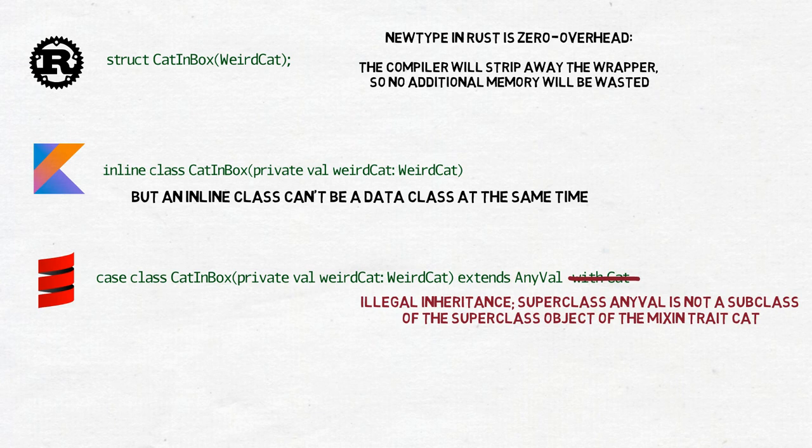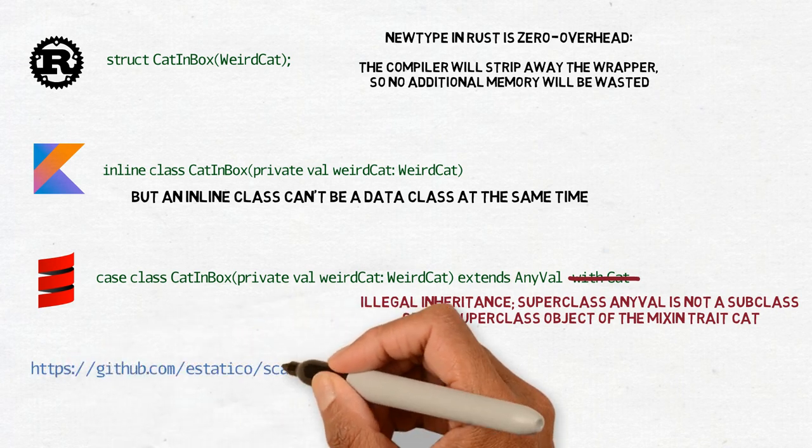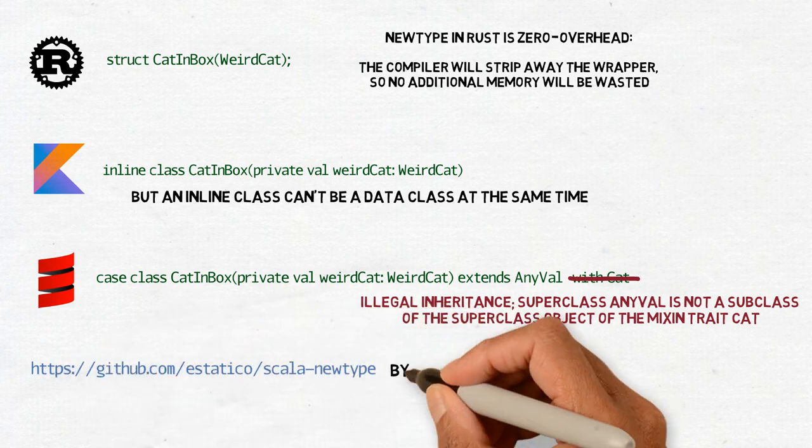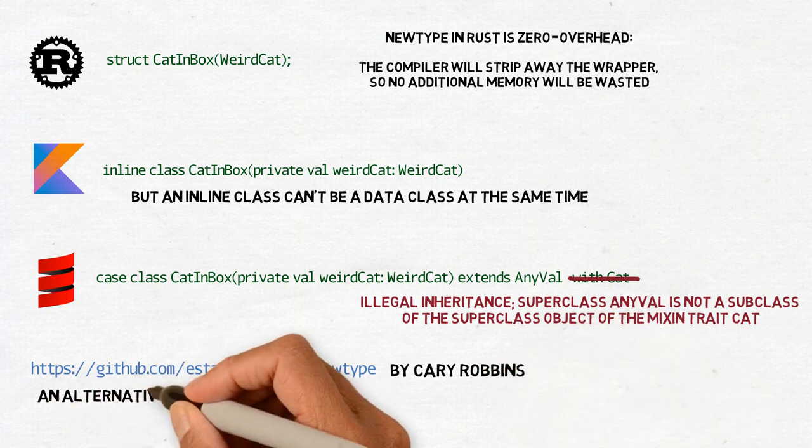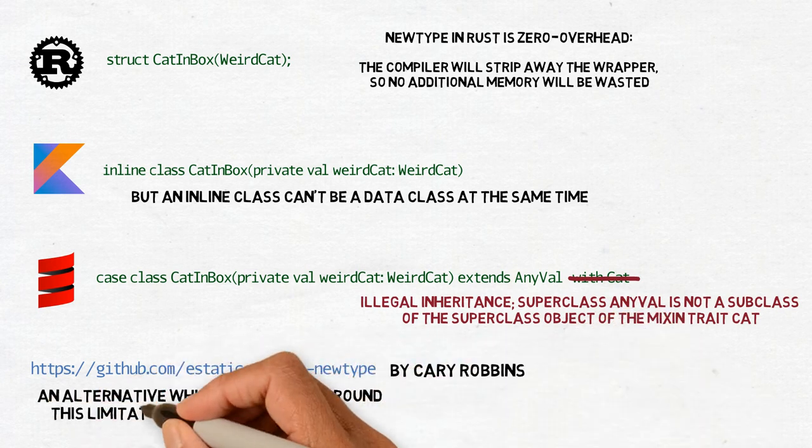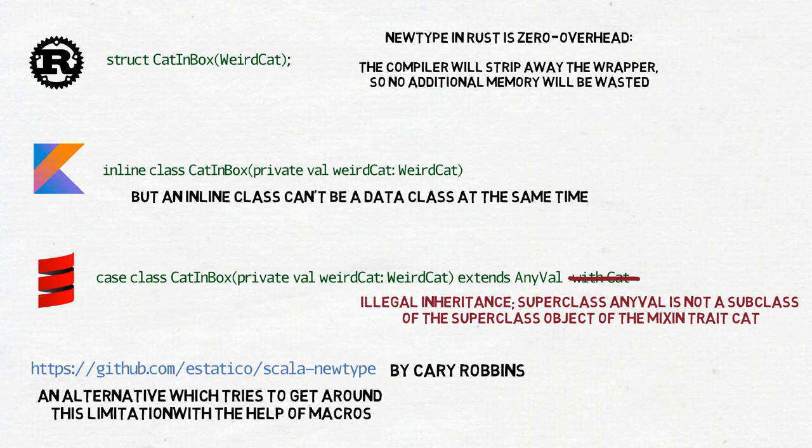It's still useful, though, only not as much. You can, for example, still use match case directly over CatInBox. However, there is an alternative. A Scala NewType library by Cary Robbins, which tries to get around this limitation with the help of macros.